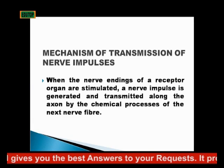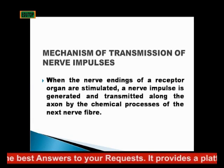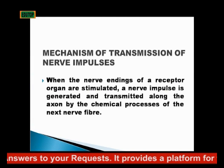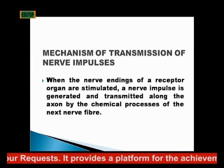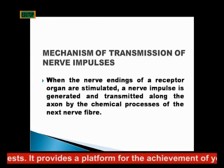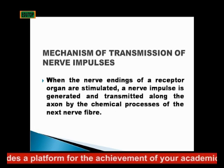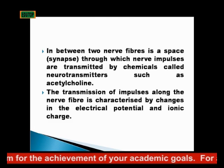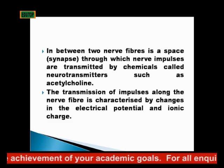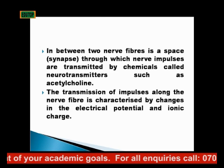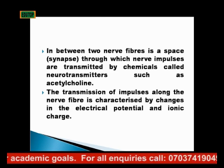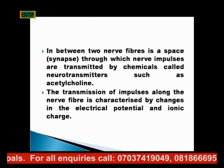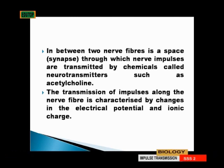The mechanism of transmission of nerve impulse: when the nerve endings of the receptor organ are stimulated, a nerve impulse is generated and transmitted along the axon by the chemical processes of the nerve fiber. In between the two nerve fibers is a space called the synapse, through which nerve impulses are transmitted by chemicals called neurotransmitters such as acetylcholine. The transmission of impulses along the nerve fibers is characterized by changes in the electrical potential and the ionic charge.